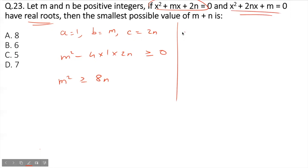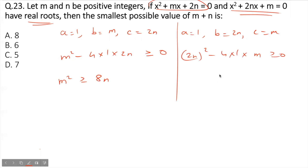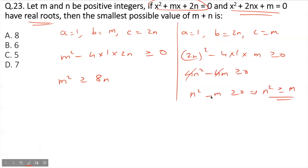Similarly, the second equation has coefficient of x² as 1, the b term as 2n, and constant term m. It will have real roots when b² - 4ac ≥ 0, giving 4n² - 4m ≥ 0. The 4s cancel, so n² - m ≥ 0, which means n² ≥ m.